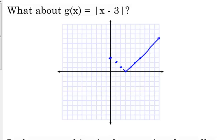I could have gotten values from the table, but I know a little bit about the absolute value function, so I'm just going off of that knowledge. It has the exact same V-shape that we had from Friday, with the same slopes — slope of negative 1 on the left side and positive 1 on the right side.